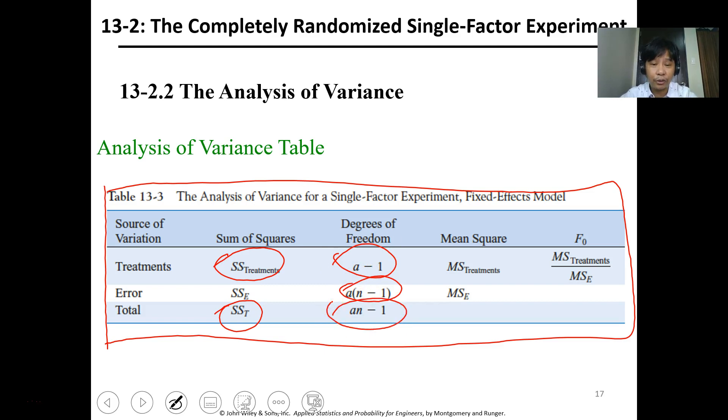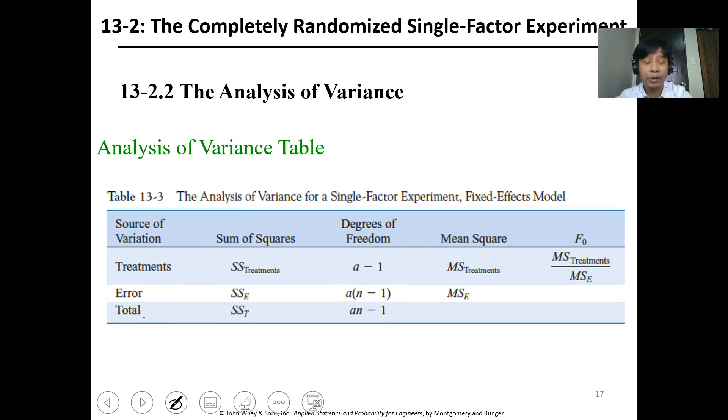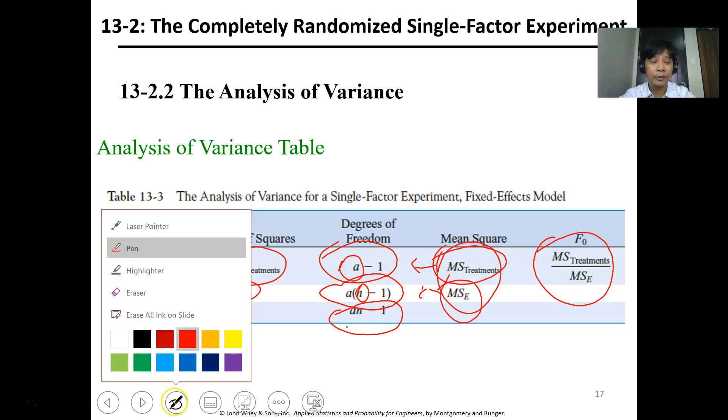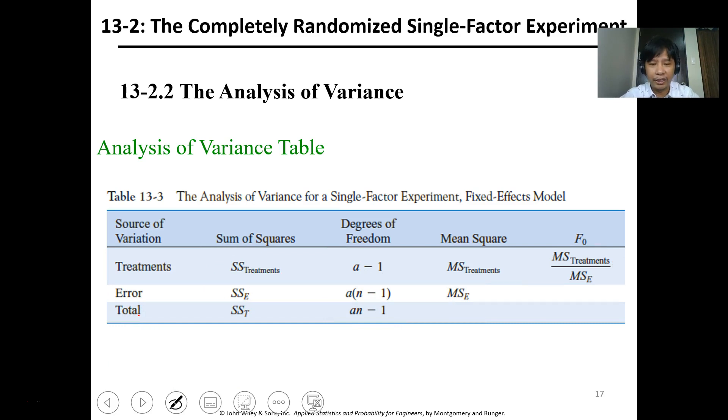This is our analysis of variance table. You can see the SS treatment and SST are computed using the formulas. SS treatment is for a specific row. We have the degrees of freedom: a-1, this is a(n-1), and this is an-1. Just follow the formula—a minus one is the number of treatments minus one, while a times n minus one is the number of observations times the treatment minus one. For MS treatment, divide by the degrees of freedom. To get F, take MS treatment over MS error. This is the same as our linear regression model.